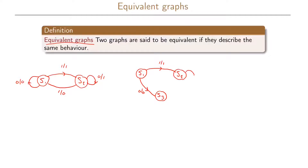In S2, with input 0 we stay in state S2 with a 1 as output. With input 1 we go to state S3 with a 0 as output. In state S3, with input 0 we go to state S1 and output a 0, and finally with input 1 we go back to state S2 with a 1 as output.